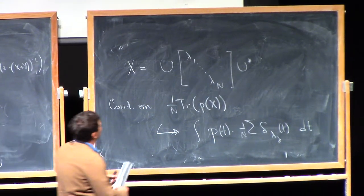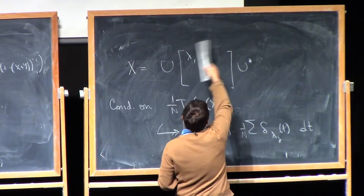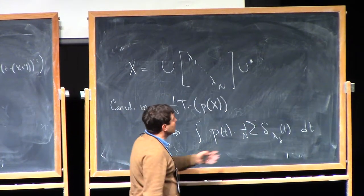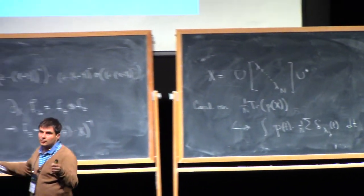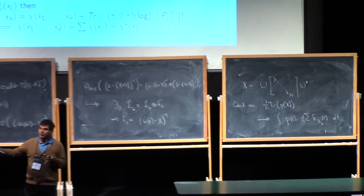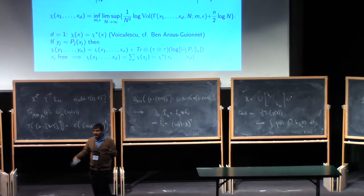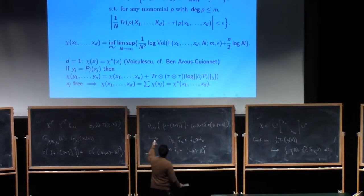And then the question is how to compute the volume of the set of all matrices whose eigenvalues are approximately the correct thing, and that is the usual integral which will bring in this Vandermonde term, lambda i minus lambda j.